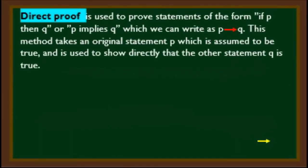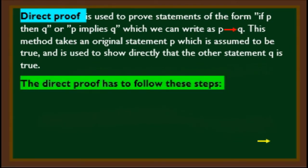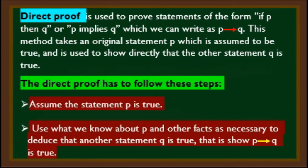Both arrived at the same conclusion but in different ways — Angel's argument is an example of a direct proof, while Joy's is an example of an indirect proof. Direct proof is used to prove statements of the form if P then Q. This method assumes P is true and uses it to show directly that Q is true. Steps: first, assume P is true; then use what we know about P and other facts to deduce that Q is true — that is, show P implies Q is true.